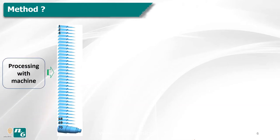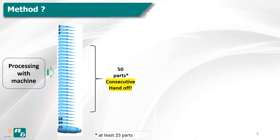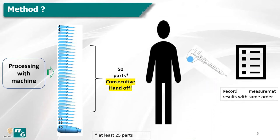Parts will be produced consecutively — at least 70 pieces. The first 10 and last 10 of those 70 pieces are not used for this study. The remaining 50 parts are measured with a suitable gauge by a sufficiently skilled operator to increase statistical reliability. All measurement results are then recorded in a special system or software in consecutive order. Please be careful: all process factors must be constant throughout the study.